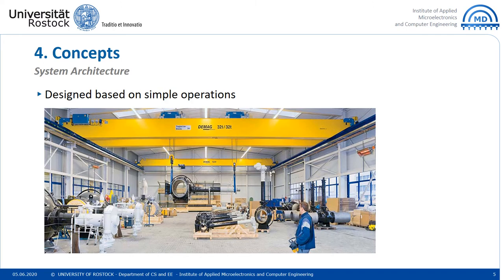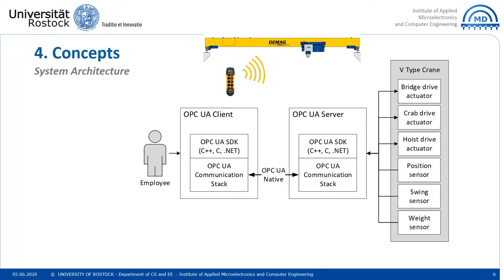In our work, we used an overhead travelling crane. The system architecture was designed on basic components and simple operations. An employee controls an overhead travelling crane using a remote controller. The bridge crane is mounted on walls close to the ceiling in a workshop. It can move forward and backwards. On the bridge, a trolley is mounted that can move left and right. The hook is mounted on the trolley and moves up and down. The overhead travelling crane is an OPC UA server, and the crane remote controller is an OPC UA client.